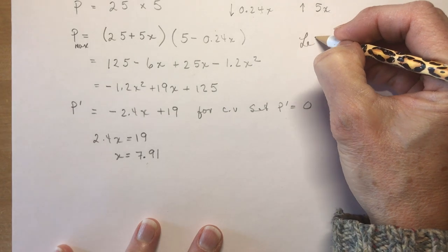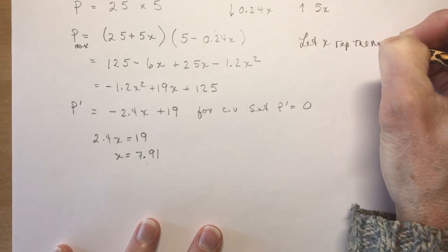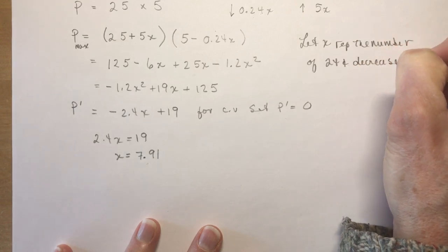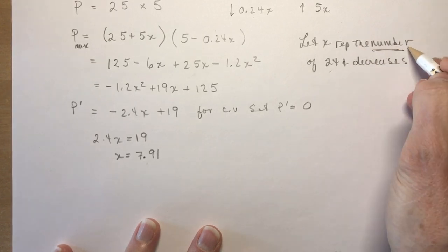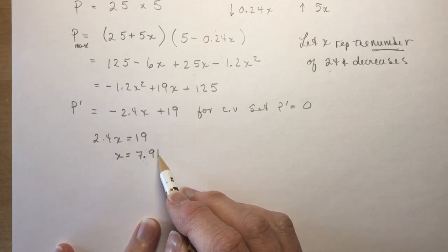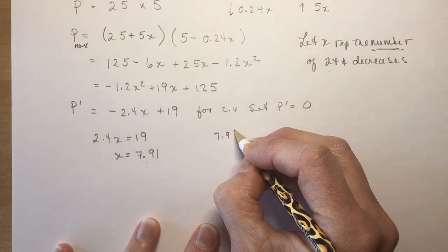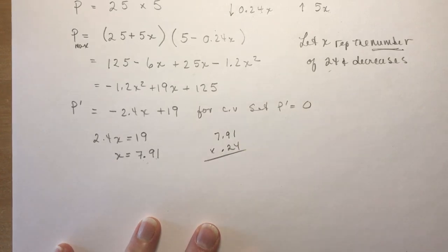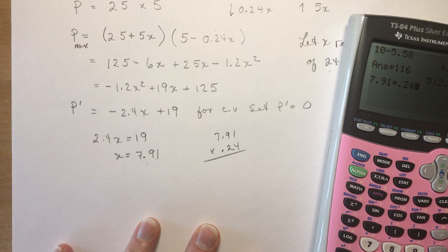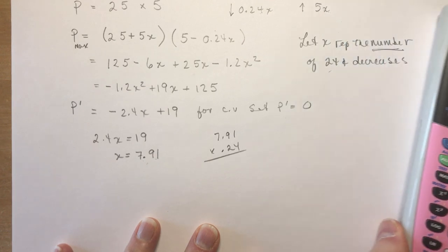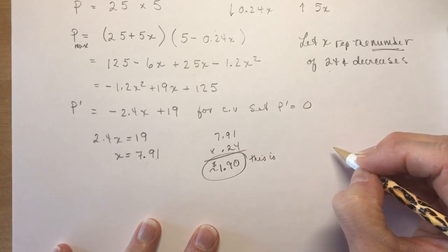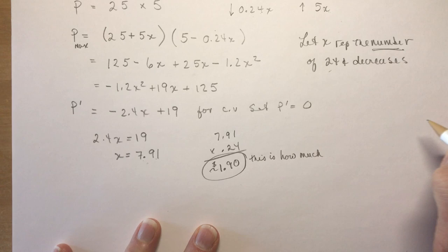So now remember when you're doing these problems, these sort of revenue problems, we should probably make a let statement. So let X represent the number - it's the number of 24 cent decreases. Okay, it's the number. It's very important that you don't say oh yeah that's the selling price. No, no, no, no. You need to reduce 7.91 times 24 cents. So 7.91 times 0.24. Let's do that on the calculator here. 7.9, gotta turn it on. Isn't that amazing? Times 0.24, I get a dollar 89.8. So approximately a dollar 90. So this is how much you reduce the price.